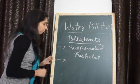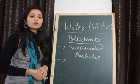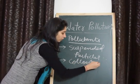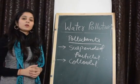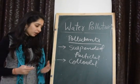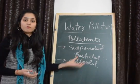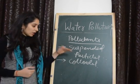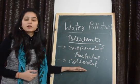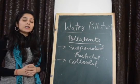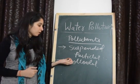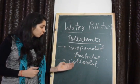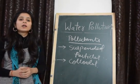Then some pollutants are present in the colloidal form. In colloidal form, they form an emulsion with the water and also make the water dirty, but the size of colloidal particles is smaller than suspended particles. These can be removed from water by using some chemical purifiers to remove the colloidal particles.